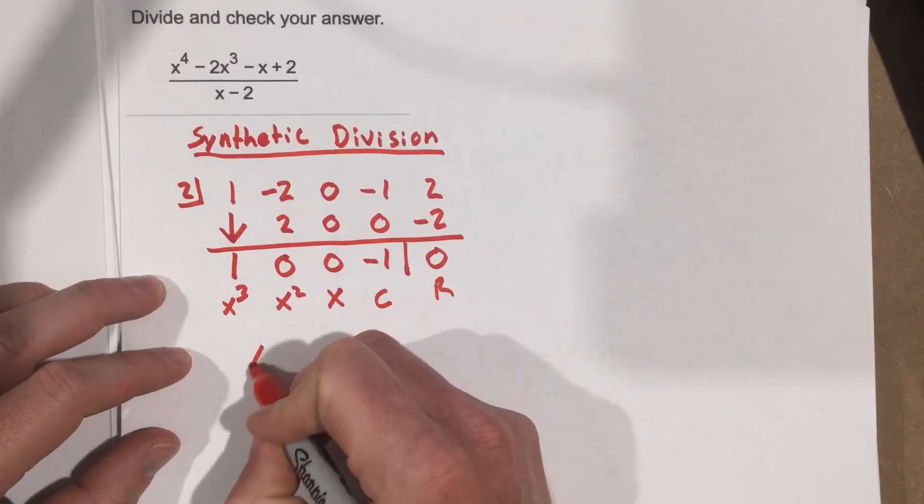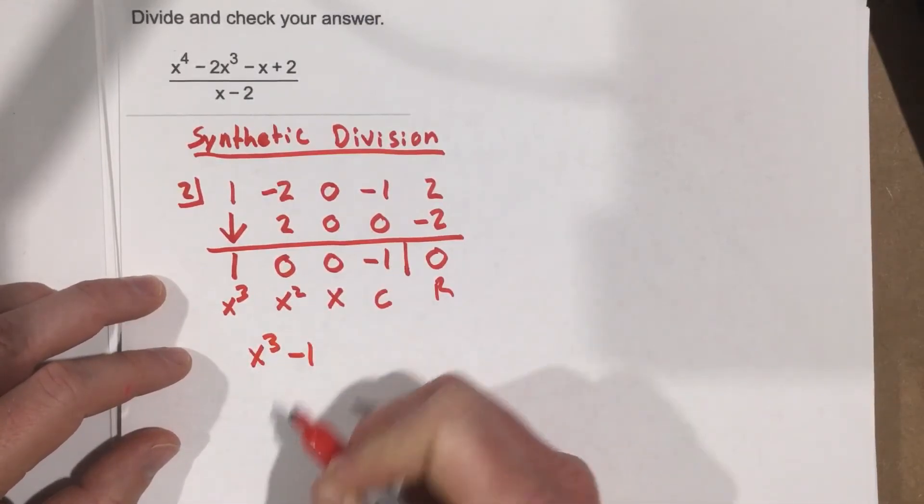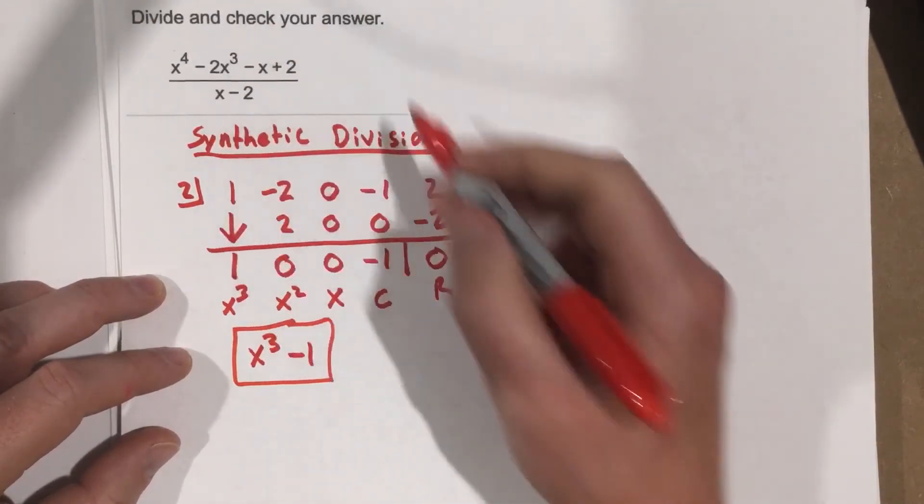So we end up with x cubed minus 1, and no remainder. How do I know that this is the solution? Well, they say check your answer.